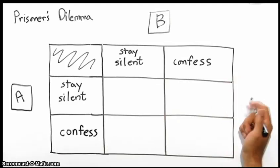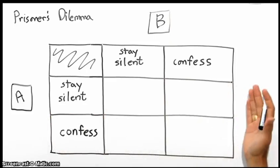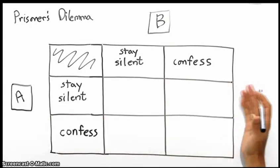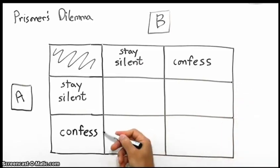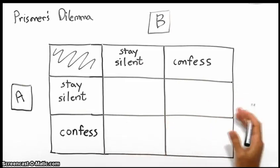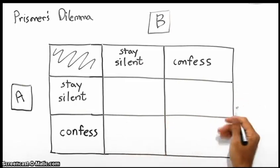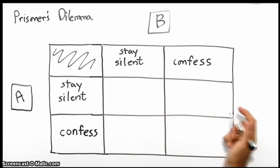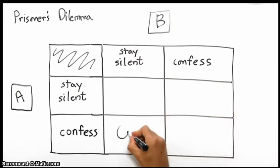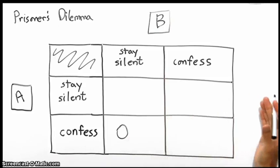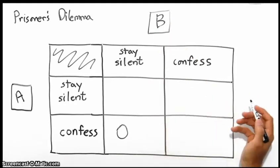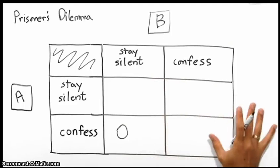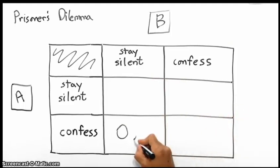And here's what I mean by that. So, let's start with Prisoner A. The police go into Prisoner A's cell and they say, look, we want you to confess to this crime. And if you do confess to the crime, which carries a sentence of 10 years, we will let you go free in return for your confession. But your partner, if they stay silent, will then take the entire sentence of 10 years.